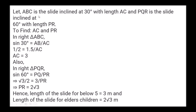Let ABC be the slide inclined at 30° with length AC, and PQR be the slide inclined at 60° with length PR. In right triangle ABC: sin 30° = AB/AC, so 1/2 = 1.5/AC, giving AC = 3 meters. In triangle PQR: sin 60° = PQ/PR, so √3/2 = 3/PR, giving PR = 2√3 meters. Hence the slide lengths are 3 meters and 2√3 meters respectively.